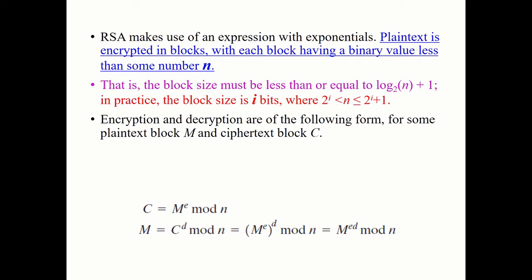RSA makes use of an expression with exponential where the plaintext is in a block — it's a block cipher. Each block will have a binary value less than some number n, and the block size must be less than or equal to log(n) + 1.